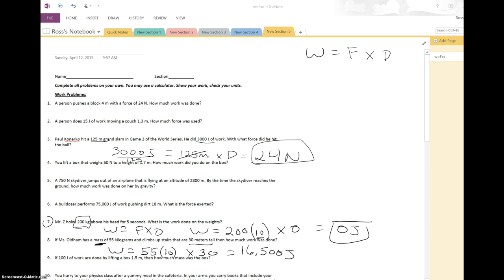Let's do number 9. If 100 joules of work are done by lifting a box 1.5 meters, then how much mass was the box? So again, I'm going to underline this to remind myself that we're not just solving for force or weight. So we've got work, 100 joules. We've got distance, 1.5 meters. And we're looking for force. So divide both sides by 1.5.